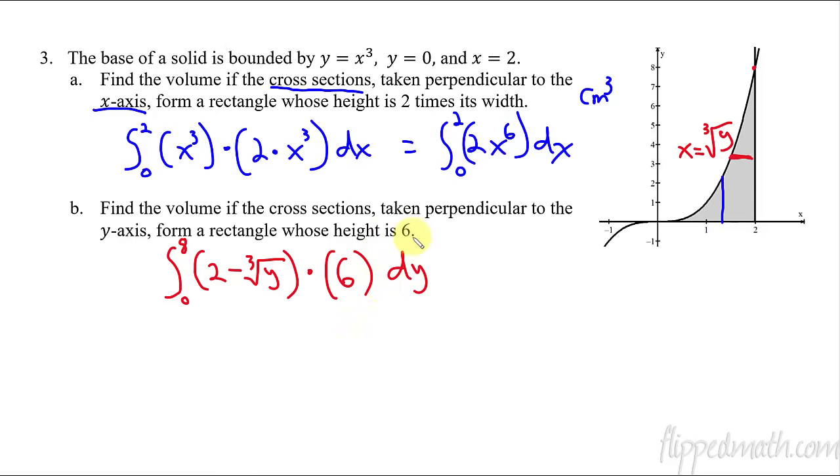Now, if it had said six times the width, let me just show you what that would look like. If it said six times the width, you'd have another one of these. And so you could write it like this, cube root of y quantity squared, right? Because it would be six times the width again. So there would be two of them and you could just write it as quantity squared. Okay. So that's, if you see that going on, just be careful if it says six times the width or if it's just the height is six.